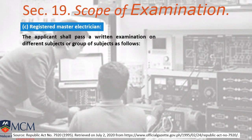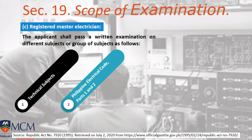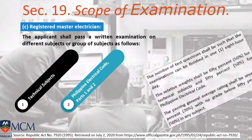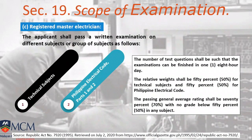For the scope of examination for Registered Master Electrician, you must pass a written examination covering technical subjects — based on standards and the Philippine Electrical Code Parts 1 and 2, where electrical codes are stated. The number of test questions shall be such that the examination can be finished in one 8-hour day — 50% for technical subjects and 50% for PEC. For REE, your rating must be 70% with no grade below 50% in any subject.